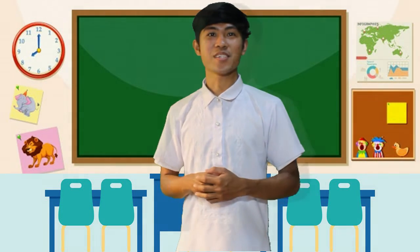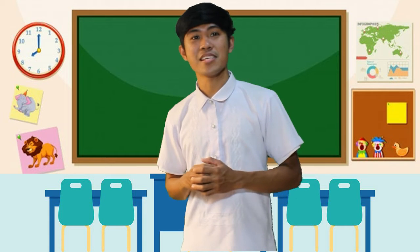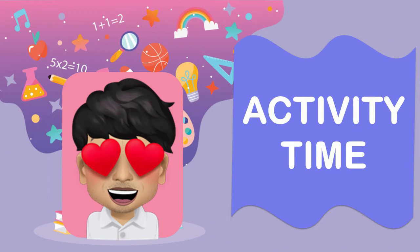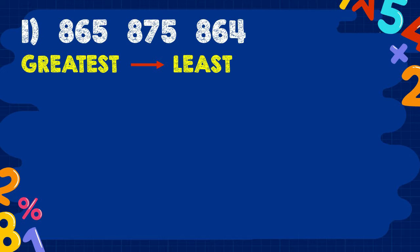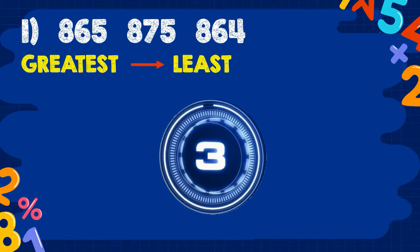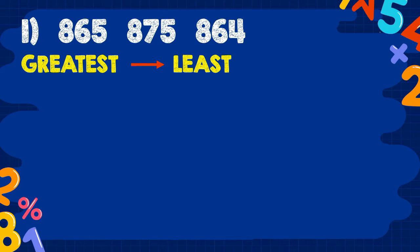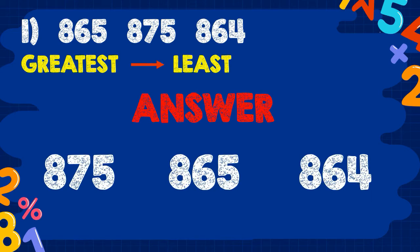Now it's your turn to show what you've learned. Get your answer sheet and let's answer the activities. Activity 1: arrange the numbers from greatest to least. I'll give you 5 seconds to answer. Number 1: 865, 875, 864. The answer for number 1 is 875, 865, 864. Good!